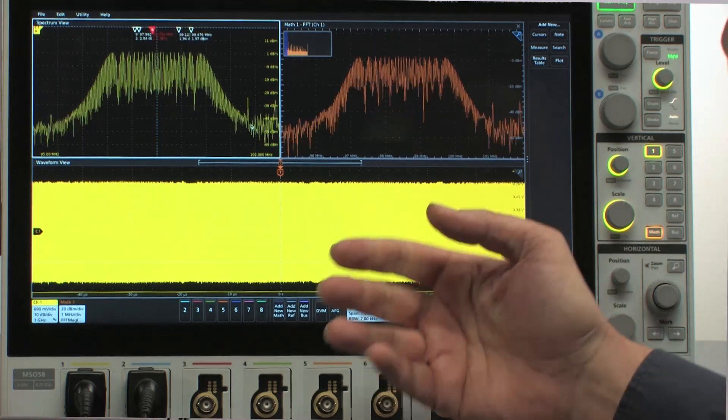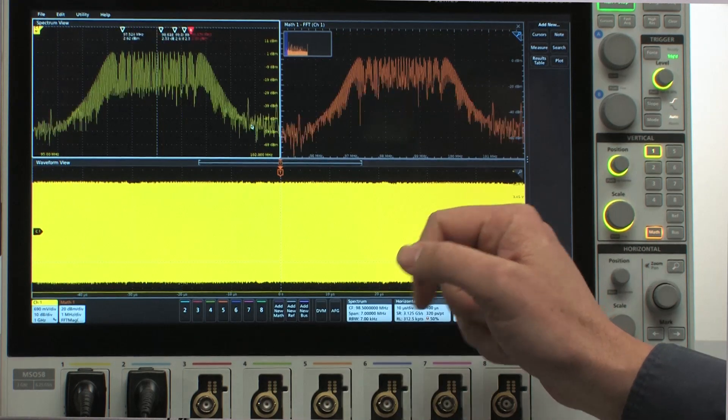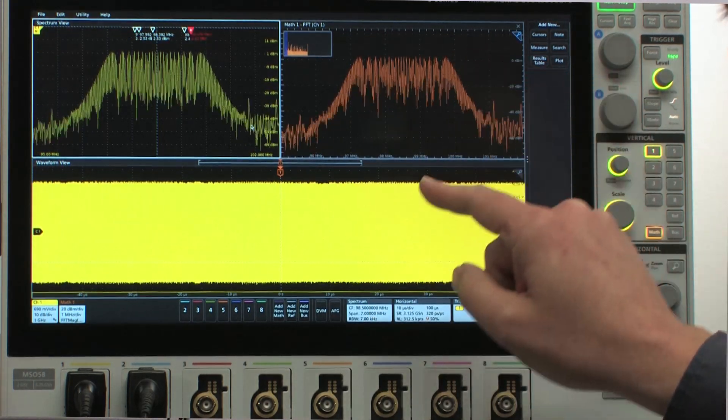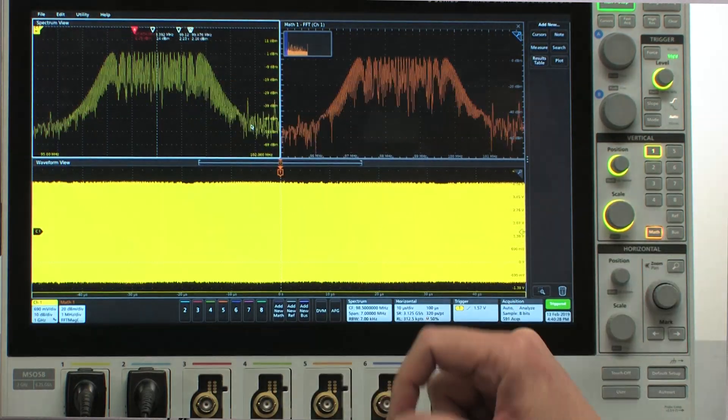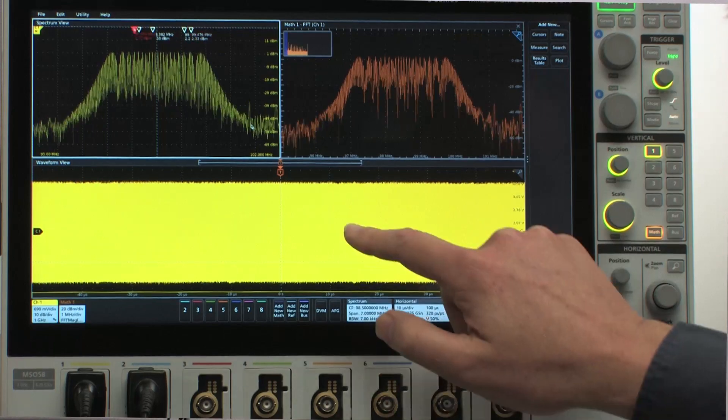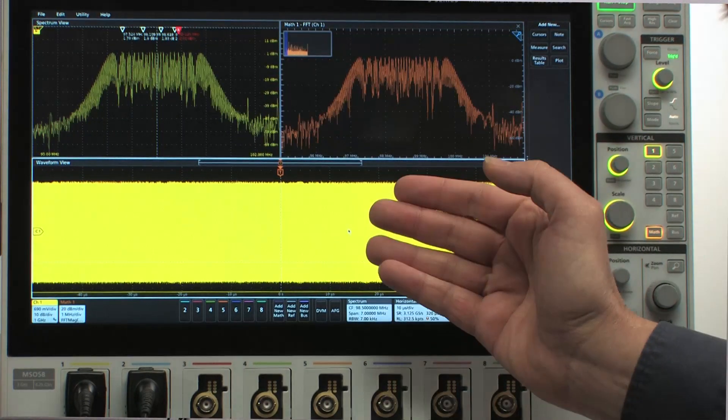But more importantly than that is this view is still tied to my time domain controls, whereas this view is not. So why is that important?